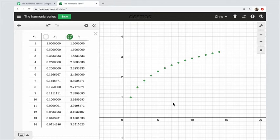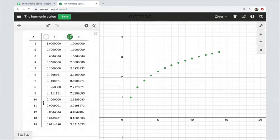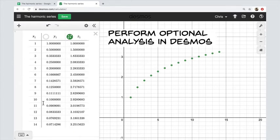So here we have our sequence of partial sums and you can see that it's a strictly increasing sequence. Kind of looks logarithmic to me. So you have the option to perform optional analysis in Desmos.